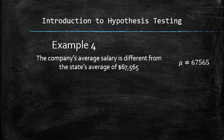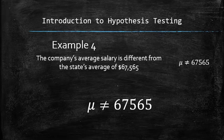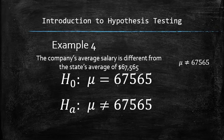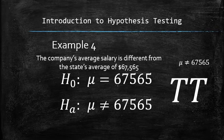In this example, the claim is in the form of an inequality. Therefore, it must be stated as an alternative hypothesis. Therefore, the null hypothesis is mu equals 67,565 and the test is two tail.